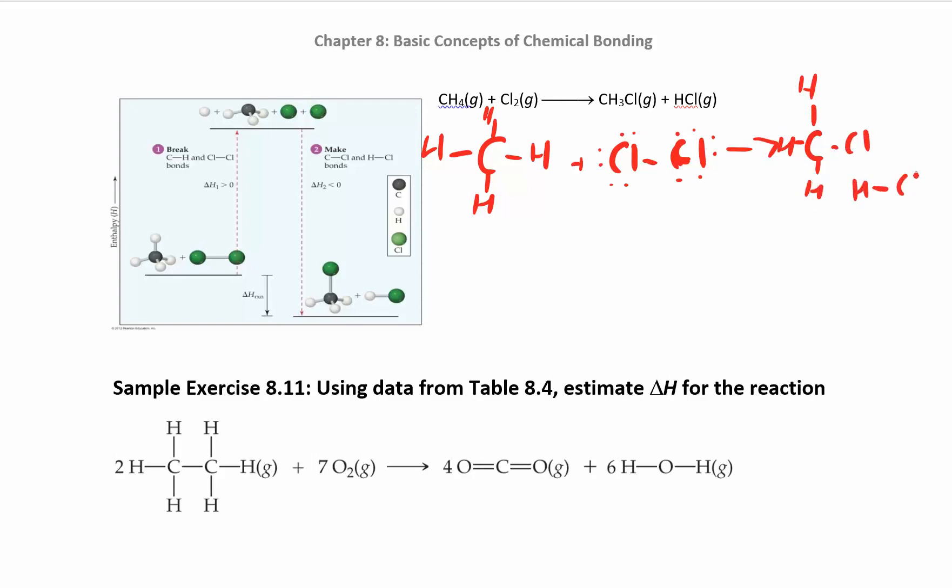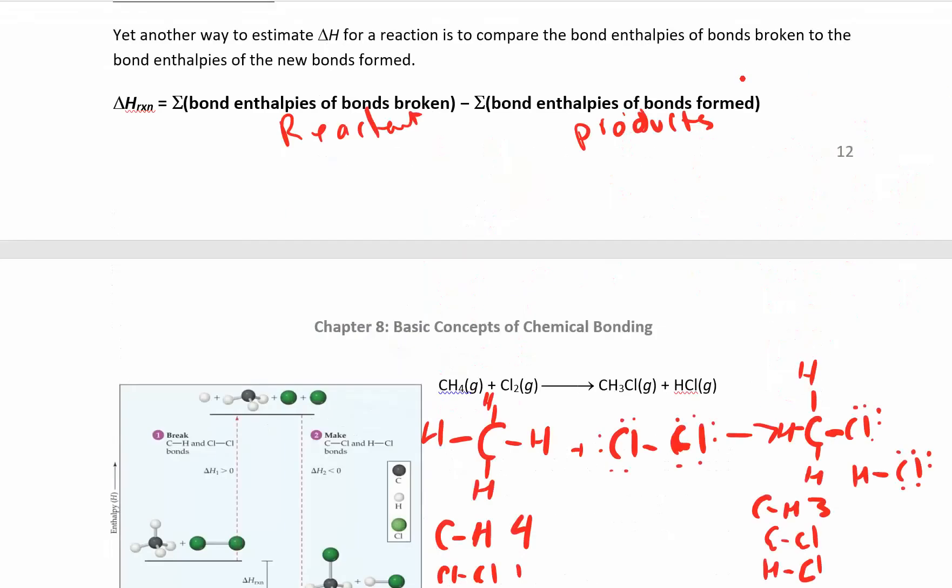So what kind of bonds do we have present here? I have four C-H bonds, and I have a Cl-Cl bond, just one of those. On the product side, I have C-H bonds again, three C-H bonds. Then I have a C-Cl bond and an H-Cl bond. I'm just looking at the different types of bonds that I have, and then I can look those up in the table.